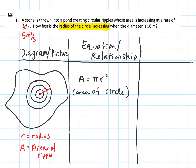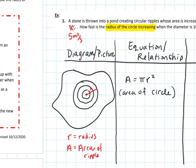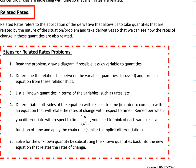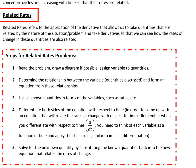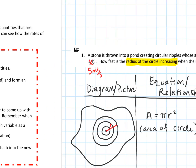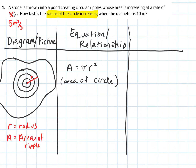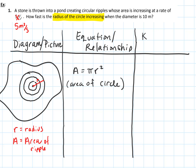When I say relationship, I mean a mathematical relationship between two or more quantities — sometimes we have more than just two. So that's our first two steps: read the problem, draw a diagram, assign variables, and determine the relationship between the quantities. The third step is to list all the known quantities in terms of the variables — such as the rates given. I also want to write the known values, and I'll add a little piece here: at the snapshot in time.